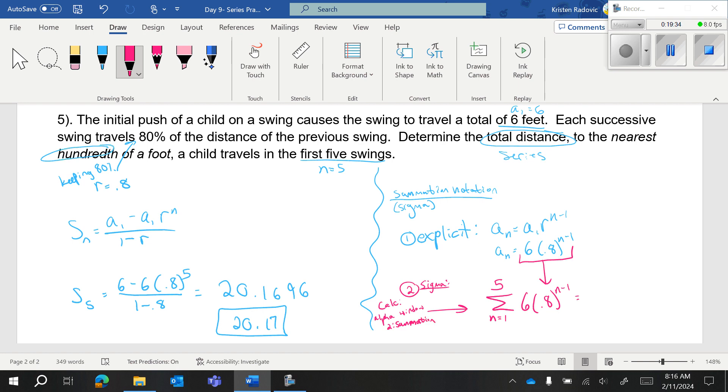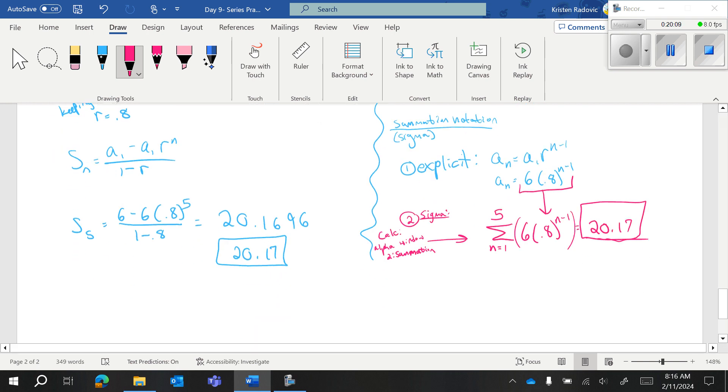And in your calculator, it should say summation. In your calculator, you have to use x because you don't have n. You should be getting the same answer 20.17. But in your calculator, it's also going to have these weird outside parentheses as well. That's fine. But you get the same thing.